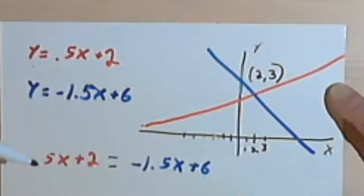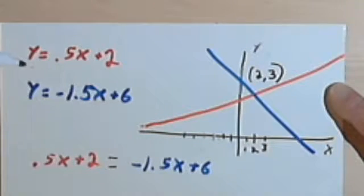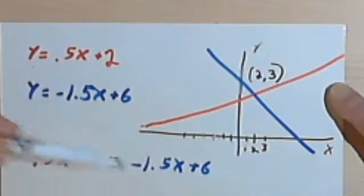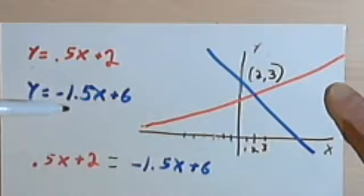But since what we've done is simply taken the first equation, the red equation, and written the right half of it over here, the .5x plus 2, and then set that equal to the right half of the blue equation, the second equation.